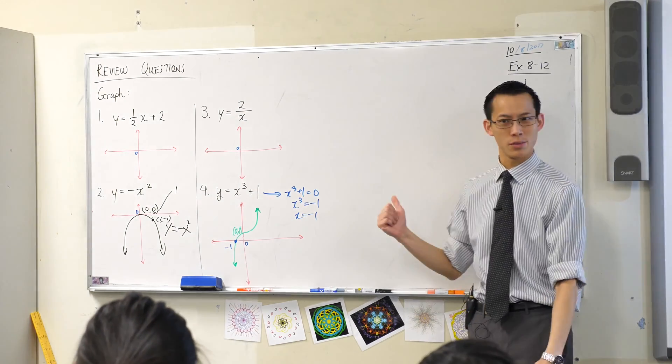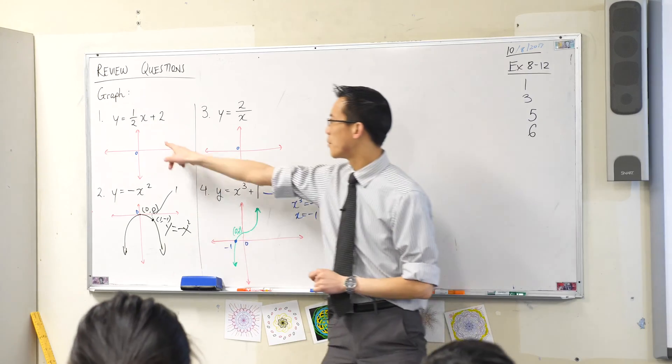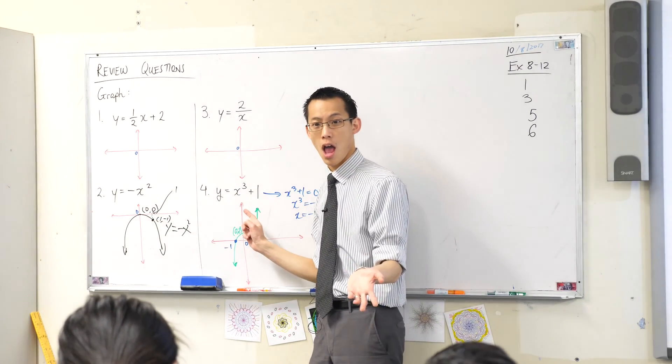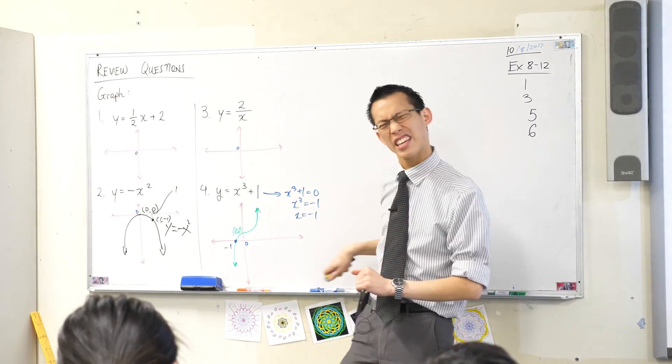Alright, let's have a look at the ones that we haven't got yet. This guy over here, what kind of shape is it? It's not a parabola, it's not a cubic curve, it's a... It's a straight line, so that's why we call it a linear function.